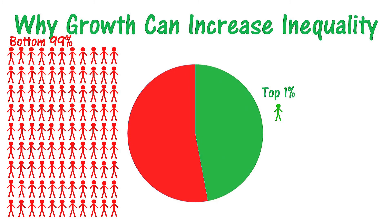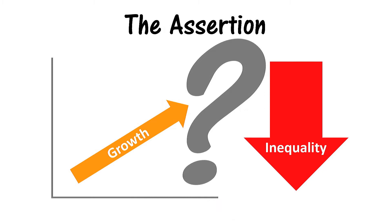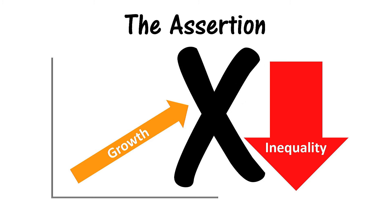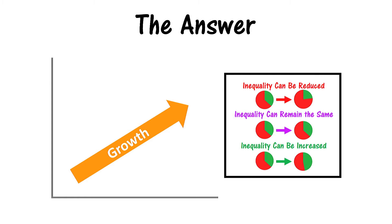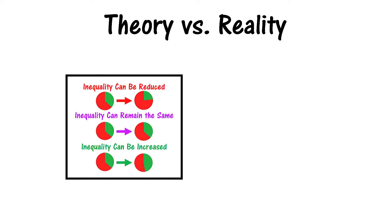Referring back to the assertion that economic growth reduces inequality, it's clear that the assertion is not entirely accurate, because growth could also maintain or increase inequality, as I've just demonstrated. To this point I've explained how economic growth can impact inequality from a theoretical perspective. In real life, however, it's difficult to define a relationship between growth and inequality because there are many other factors that also impact inequality, such as changing social values or government policies. Let's briefly examine U.S. economic growth from a historical perspective to see what I mean.